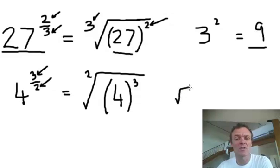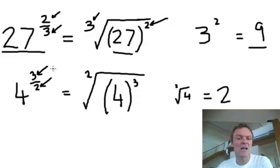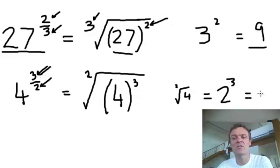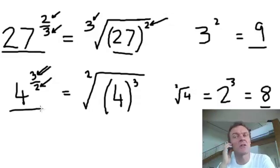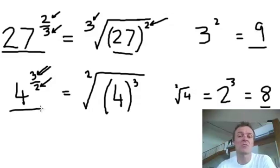What's the square root of 4? The square root of 4 is 2. Then I will cube it — 2 cubed is 8. Either way, whichever way you do it, I'm going to get 8. So that's the answer to that one. That's the difference between rational exponents and the radical notation it comes from.